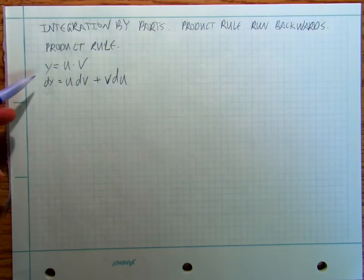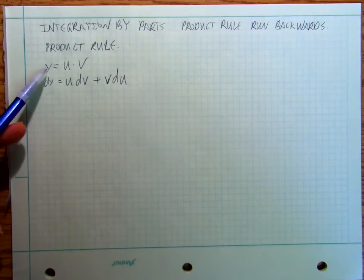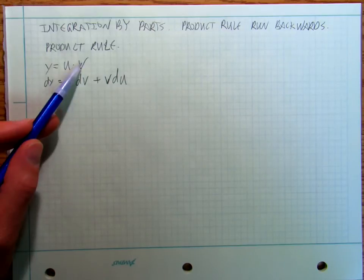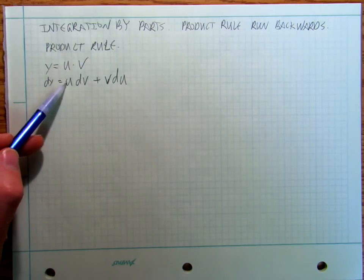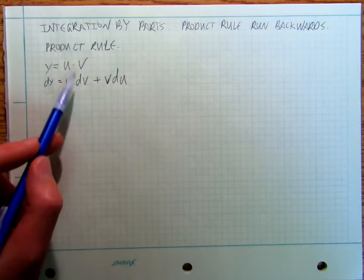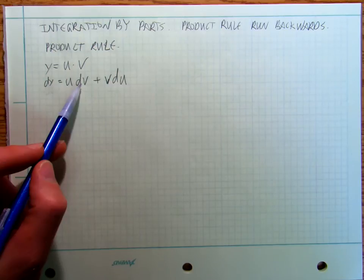Okay, so there's our product rule right there. That if I want to find the derivative of a function times a function, I leave this one constant and then I take its derivative over here, and then I take the derivative of this one and I leave this one here.